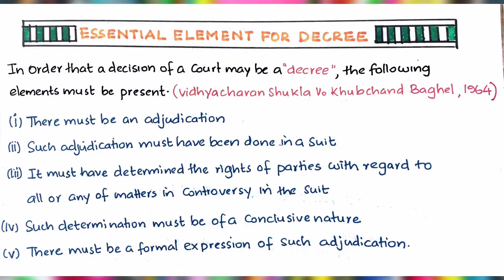Now let us know what are the essential elements for a decree. In order that a decision of a court may be a decree, the following elements must be present. This was held under the case of Vidyacharan Shukla v. Ghupchand Bhagel, 1964. First, there must be an adjudication. Second, such adjudication must have been done in a suit. Third, it must have determined the rights of the parties with regard to all or any of the matters in controversy in the suit. Fourth, such determination must be of a conclusive nature. And fifth, there must be a formal expression of such adjudication.